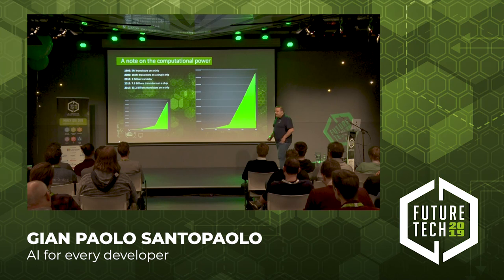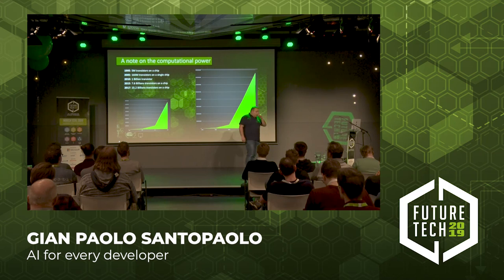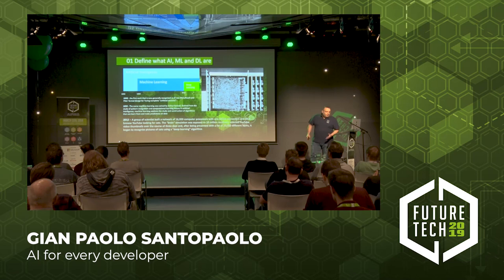In 2015, we got 7.5 billion transistors on a single chip — the entire population of the world. Only two years later, we doubled it, and it went to another scale. That's why today you are hearing everywhere about artificial intelligence — because nowadays we have the computational power to run it.